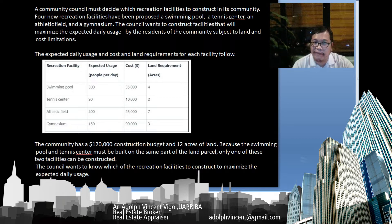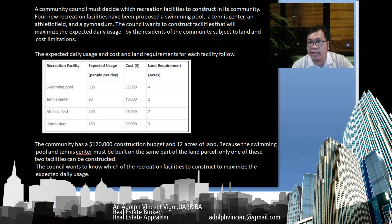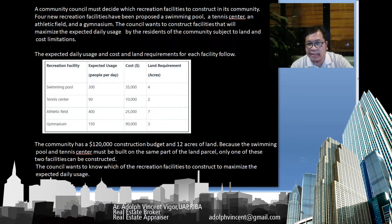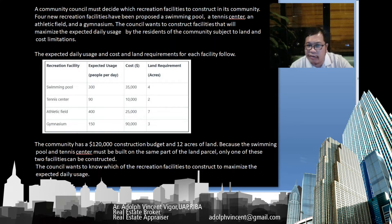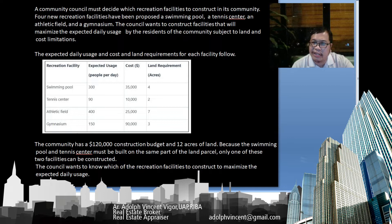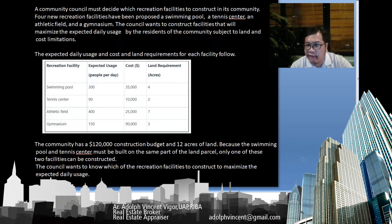The expected daily usage and cost and land requirements for each facility are as follows. The swimming pool has an expected usage of 300 people per day, a cost of $35,000, and a land requirement of 4 acres. The tennis center is 90 people per day, $10,000, and 2 acres. The athletic field is 400 people per day, $25,000, and 7 acres. The gymnasium caters to 150 people per day, costs $90,000, and requires 3 acres. The community has a $120,000 construction budget and 12 acres of land.